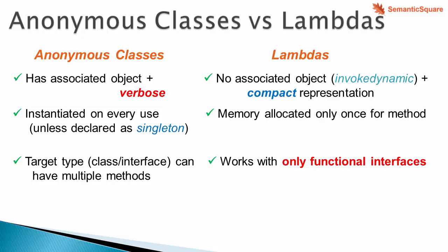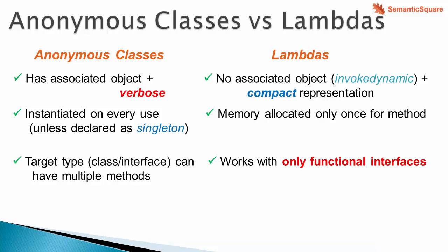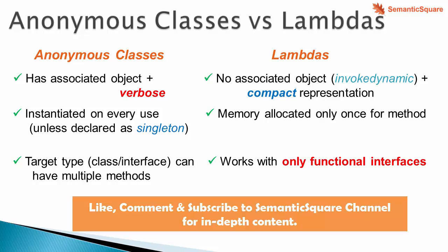With an anonymous class, the target type can have multiple methods — the target type being a class or interface the anonymous class is inheriting from or implementing. But with a lambda it has to be a functional interface; it cannot even be an abstract class with a single abstract method. This will be demonstrated in the next lecture. Lambdas are more efficient, more compact, and work only with functional interfaces. In the next lecture we will do a demo of lambda expressions.